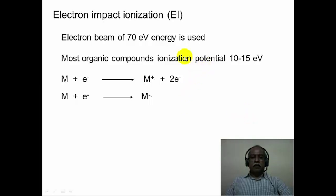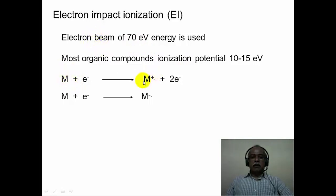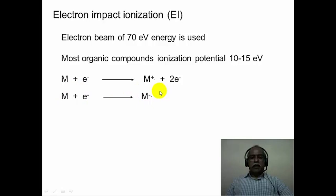In electron impact ionization mass spectrometry, high energy electron beams where the electron energy is about 70 electron volts are used. Most organic compounds have an ionization potential in the range of 10 to 15 electron volts. The use of the high energy electron beam essentially ensures that all molecules which come in contact with such a beam are ionized using two mechanisms: the molecule can either have an electron knocked off from its valence shell to produce the cation radical, or an electron can be added to the molecule producing the anion radical. Mass spectrometry can be done either in the positive ion mode detecting the cation radical species or in the negative ion mode detecting the anion species produced during ionization.